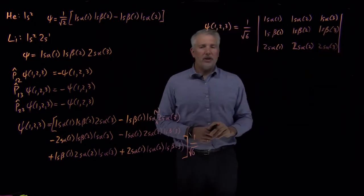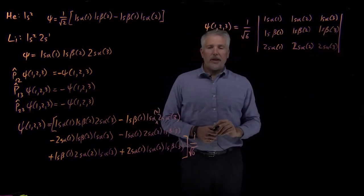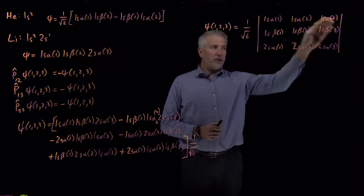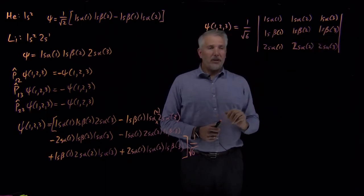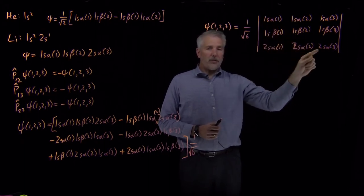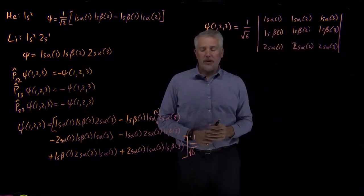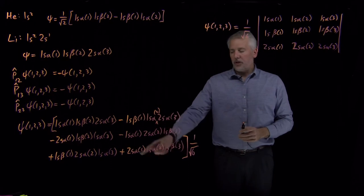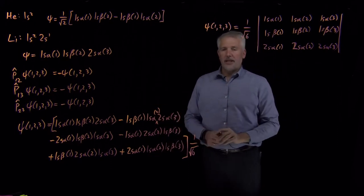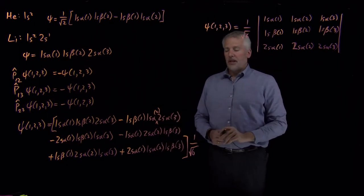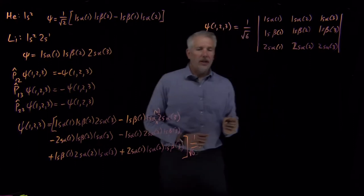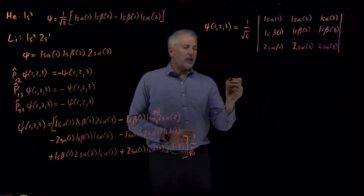If you know how to take a determinant, you just write this matrix down and take its determinant. Each one of the products of three terms that show up in the determinant will be one of the terms in the wave function, and the signs will be exactly as they need to be in the properly anti-symmetrized wave function.